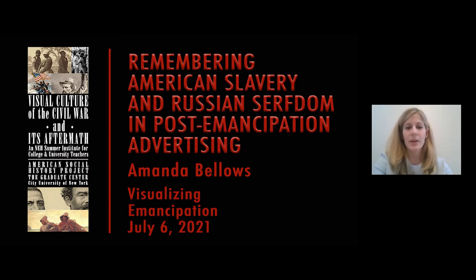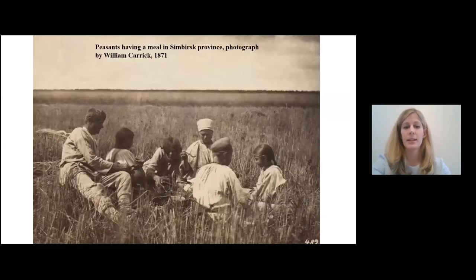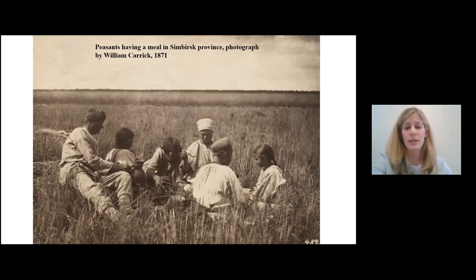American slavery and Russian serfdom were two contemporaneous systems of forced labor that began in the 1600s and ended in the 1860s. In 1649, in Russia, the Tsar and his government passed the Law Code of 1649. It enserfed the Russian peasantry, who composed a significant majority of the population.